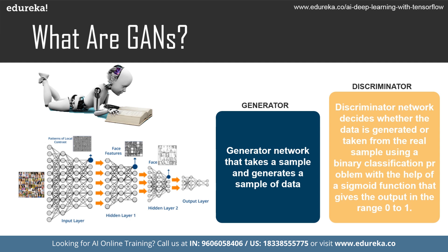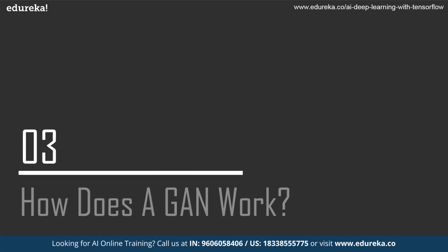The GAN architecture consists of two sub-models: the generator and the discriminator. The generator network takes a random sample and generates synthetic data. The discriminator network then decides whether the data is generated or comes from the real sample, using binary classification with a sigmoid function that outputs a value in the range 0 to 1.